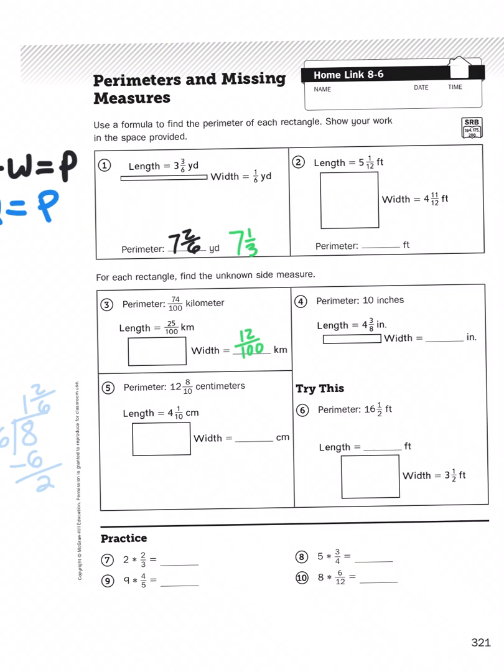So these perimeter problems are no different than the ones you've already been exposed to in previous units. It's just that we've added an extra layer. Now that you've learned how to deal with fractions and mixed numbers with addition, multiplication, division, and subtraction, you can now apply those new skills toward another skill you've collected, which is finding the perimeter of a rectangle.